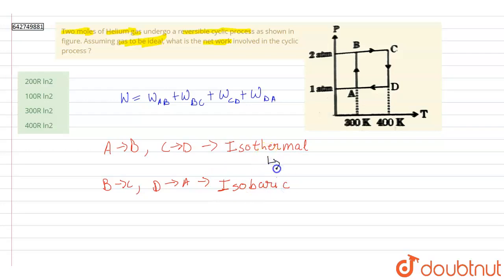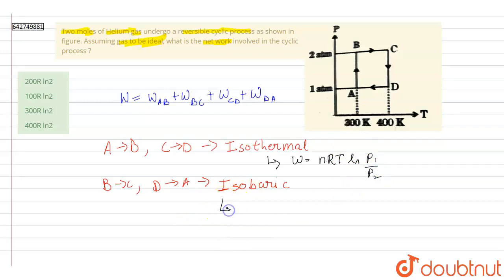The work done for an isothermal process is given by W = nRT ln(P1/P2). For an isobaric process, the work done is given by W = nRΔT = nR(T2 − T1).